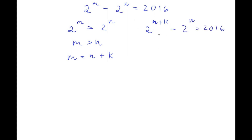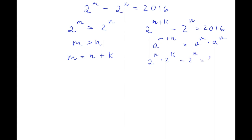Now, we have 2 to the power of n plus k, and I want to simplify this. This is essentially in the form a to the power of m plus n, which can be simplified into a to the power of m times a to the power of n. So 2 to the power of n plus k equals 2 to the power of n times 2 to the power of k. Because both terms have 2 to the power of n in them, I'm simply going to factor out 2 to the power of n.